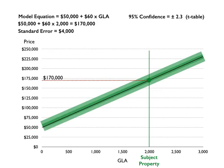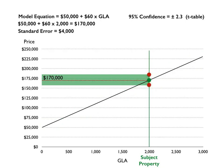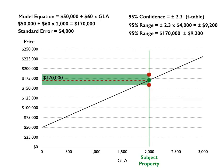We end up with an area that looks like this. To estimate what our subject property value is, we look at plus or minus that value and translate it over to the price axis. The range is plus or minus 2.3 times the standard error of four thousand dollars, giving us plus or minus nine thousand two hundred. We take our one hundred and seventy thousand value, add and subtract that, and get a range of one hundred and sixty thousand eight hundred to one hundred and seventy-nine thousand two hundred.